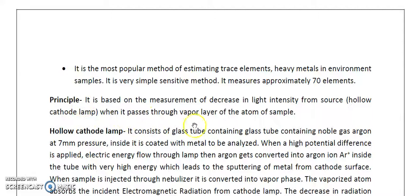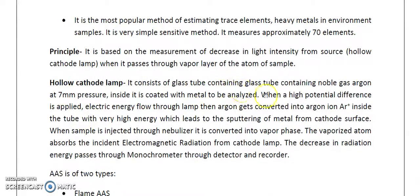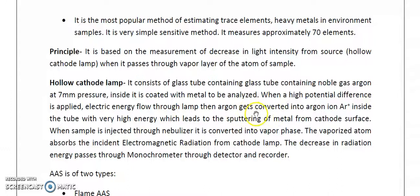The holocathode lamp consists of a glass tube containing a noble gas such as argon at 7 mm pressure, with the interior coated with the metal to be analyzed. For example, for chromium we use a chromium lamp, for iron an iron lamp, for mercury a mercury lamp, and for strontium a strontium lamp. When a high potential difference is applied, electric energy flows through the lamp and argon ions are produced inside the tube with very high energy.